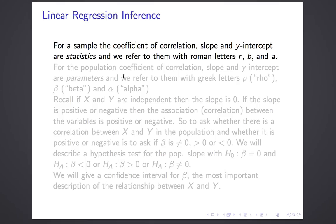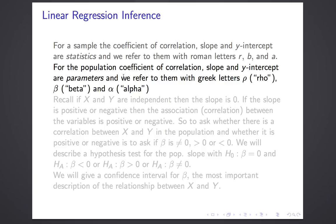But if we imagine the population coefficient of correlation, the slope, and the y-intercept for a population, those quantities are parameters. Following our convention, we'll refer to them by Greek letters. We'll use rho — which is the ancestor of our r, though it looks more like a p — to stand for the coefficient of correlation. Beta, which looks pretty much like b, represents the slope. And alpha, which more or less looks like an a — it looks more like a fish swimming to the left — represents the y-intercept.